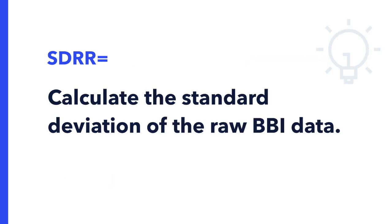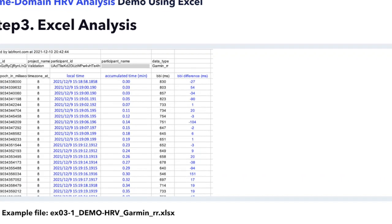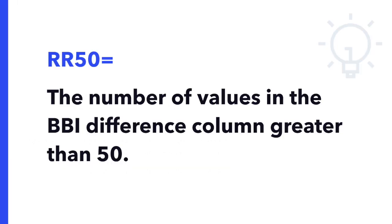To get the SDRR, we need to calculate the standard deviation of the raw BBI data. To calculate the RR50 and PRR50, we need to first add a BBI difference column showing the difference between each BBI value. Once that column has been created, we can calculate the sum of all of the absolute values greater than 50, and that result is our RR50 value.